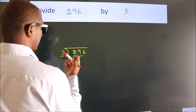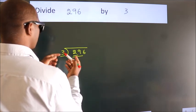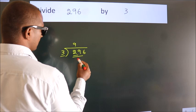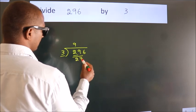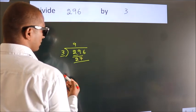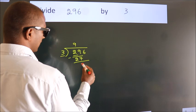A number close to 29 in the 3 table is 3 nines, 27. Now we should subtract. We get 2.